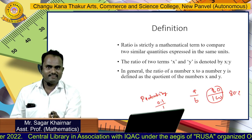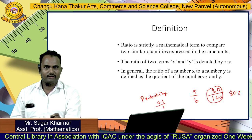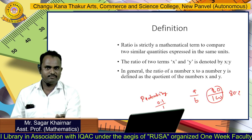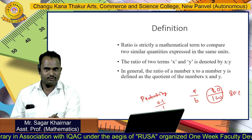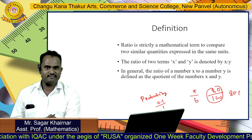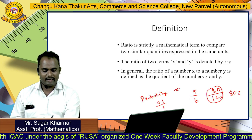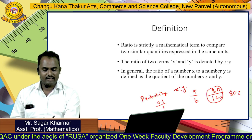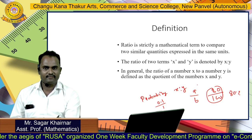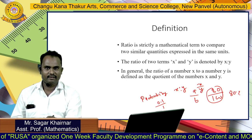The ratio is strictly a mathematical term to compare 2 similar quantities expressed in the same unit. The ratio of 2 terms x and y is denoted by x as to y. We also write down this ratio as x upon y.